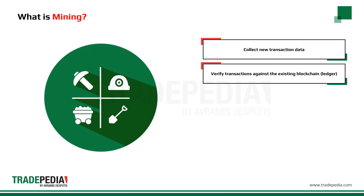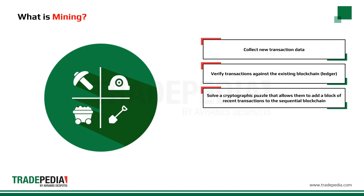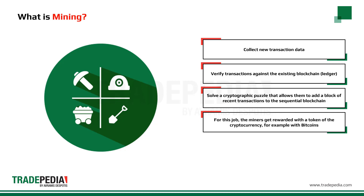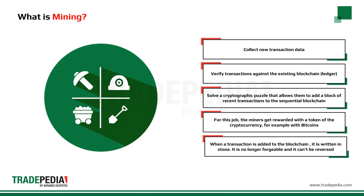For a transaction to be successful, it must be verified and added to the sequential blockchain as new blocks. Bitcoin uses a proof-of-work scheme, or mining. Anyone with a computer and an internet connection can be a miner. Miners collect new transaction data, verify transactions against the existing blockchain ledger, and solve a cryptographic puzzle that allows them to add a block of recent transactions to the blockchain. For this job, miners get rewarded with a token of the cryptocurrency — for example, Bitcoins. When a transaction is confirmed and added to the blockchain, it is written in stone: it is no longer forgeable and cannot be reversed.